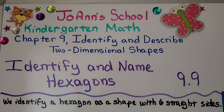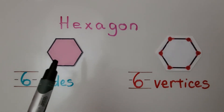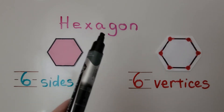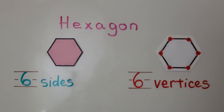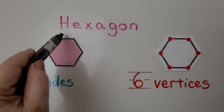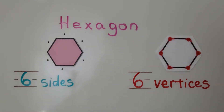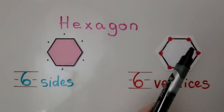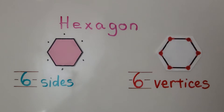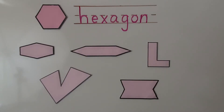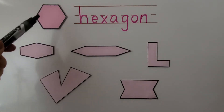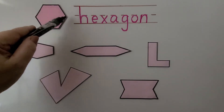Lesson 9.9: identify and name hexagons. We identify a hexagon as a shape with six straight sides. Hexagon — h-e-x-a-g-o-n — has six sides. We can count them: one, two, three, four, five, six. And they have six vertices: one, two, three, four, five, six. This is a regular hexagon that has six sides of equal length — each side is the same length as the others.